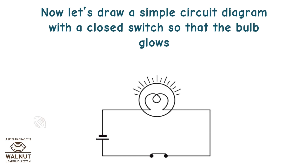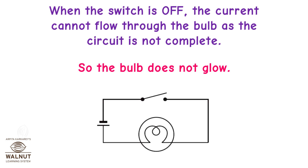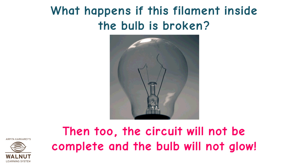Now let's draw a simple circuit diagram with a closed switch so that the bulb glows. When the circuit is closed, the current can flow through the bulb and make it glow. This happens when the switch is on. When the switch is off, the current cannot flow through the bulb as the circuit is not complete, so the bulb does not glow. What happens if the filament inside the bulb is broken? Then too, the circuit will not be complete and the bulb will not glow.